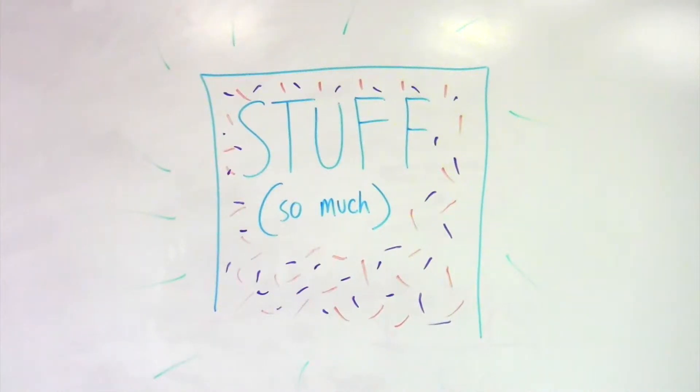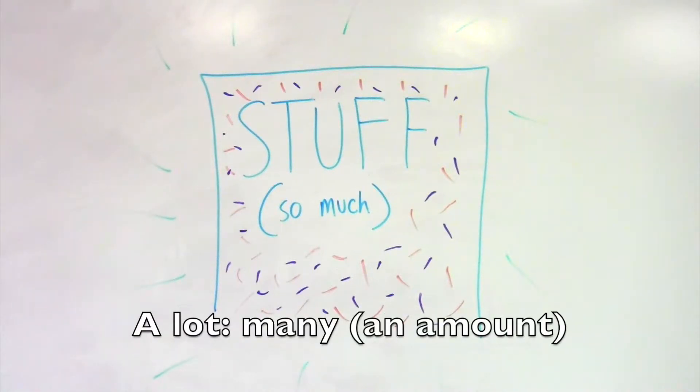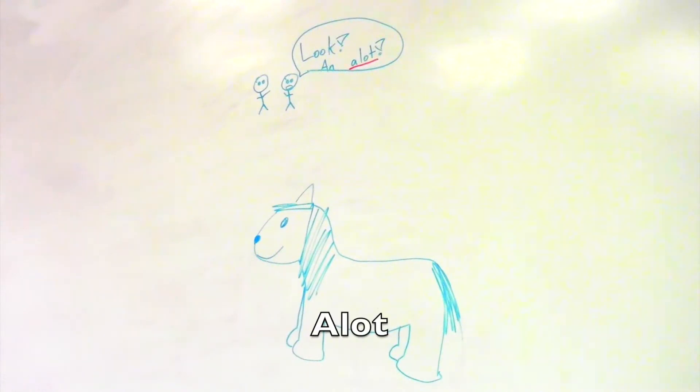A lot and alot are two different words. A lot with a space in the middle means many, referring to an amount, whereas alot together is not actually a word, it's just a common mistake.